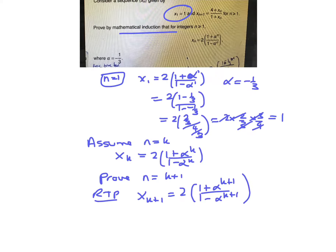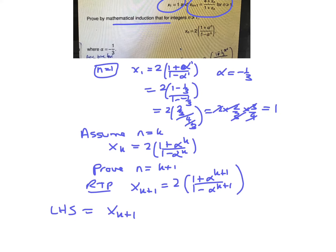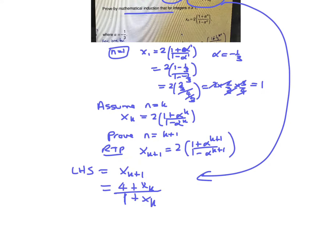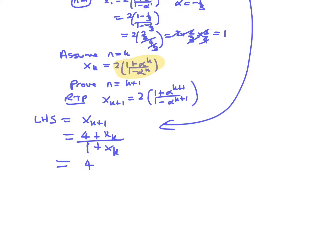We're going to have to use that original statement. So if we look at the left-hand side, x_(k+1) equals x_(k+1). If you use this original statement and sub it in, that would equal (4 plus x_k) over (1 plus x_k). Now x_k, from our assumption, is equal to that, so we need to substitute that in.